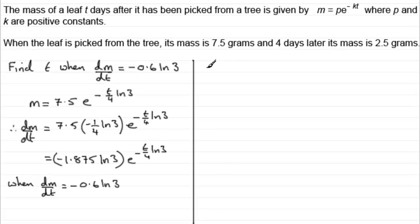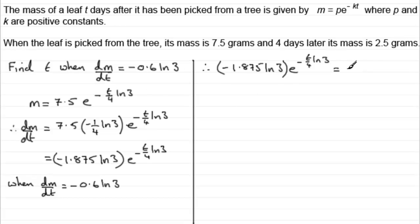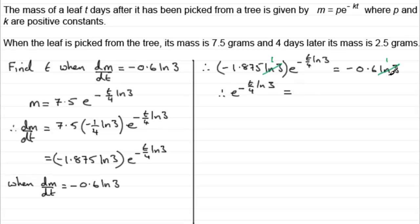So therefore: minus 1.875 natural log of 3 times e to the power minus t over 4 natural log of 3 equals minus 0.6 multiplied by natural log of 3. The natural log of 3 appears on both sides, so we divide both sides by natural log of 3. Then dividing both sides by minus 1.875 gives e to the power minus t over 4 natural log of 3 equals minus 0.6 divided by minus 1.875, which is 0.32.